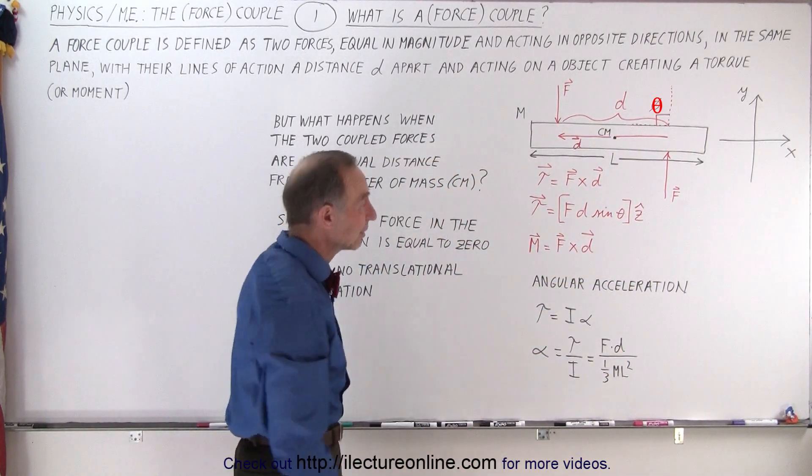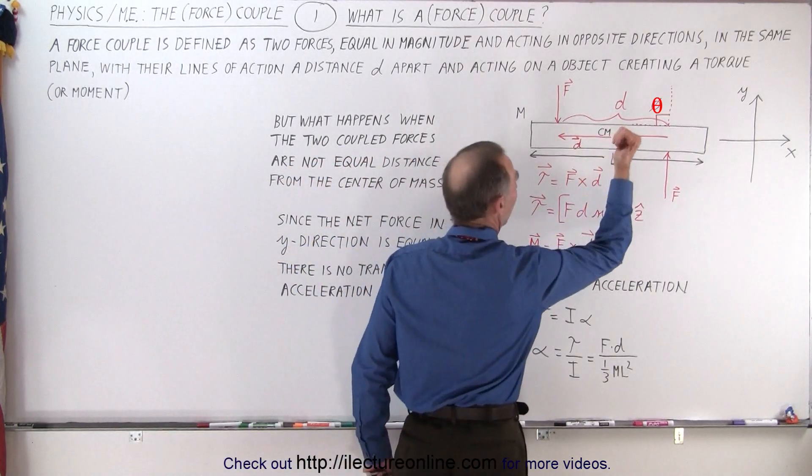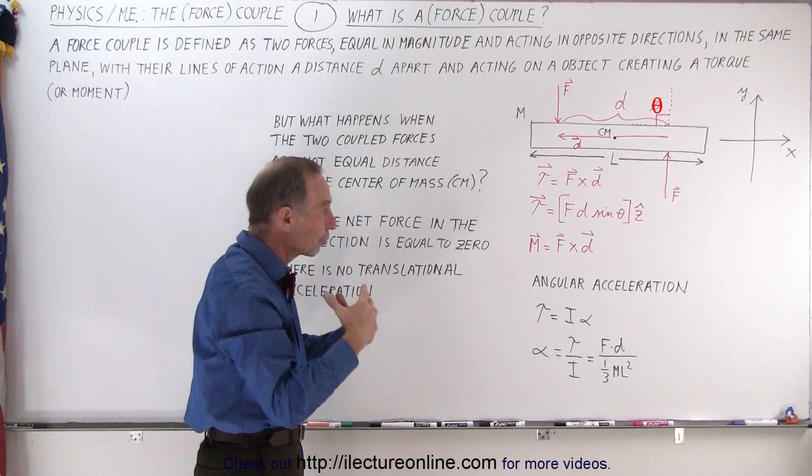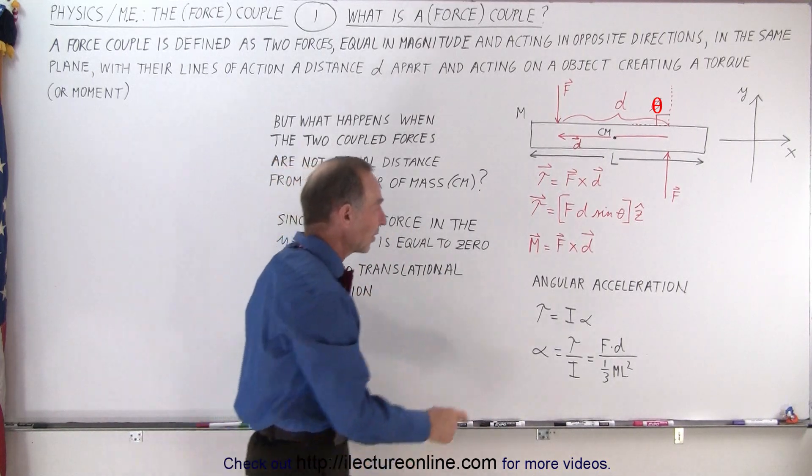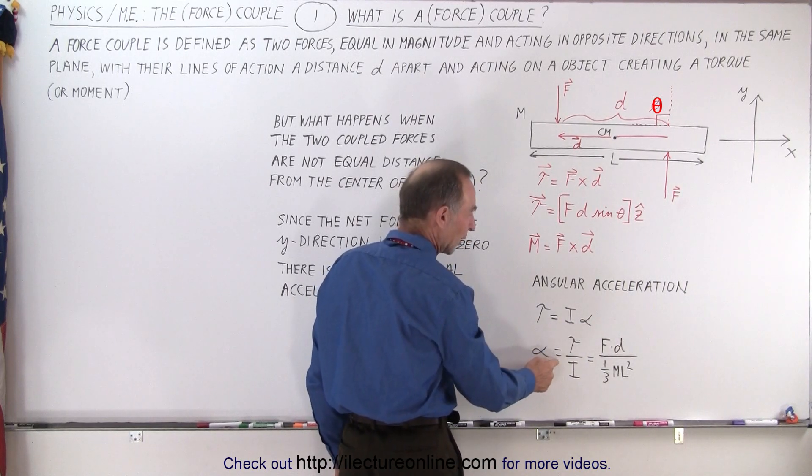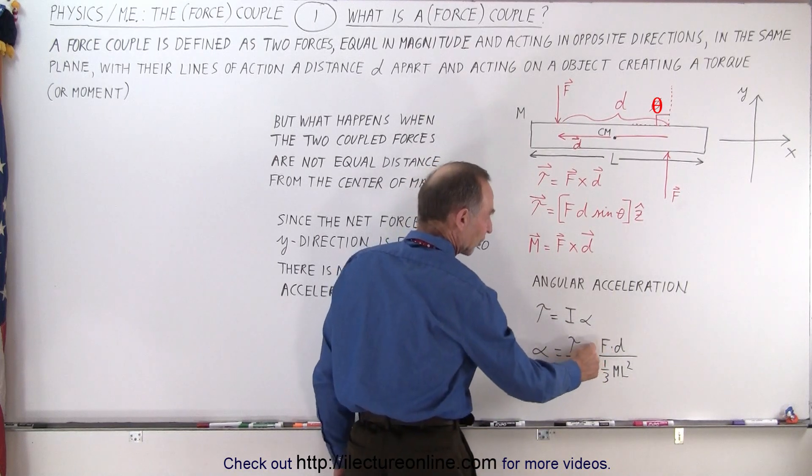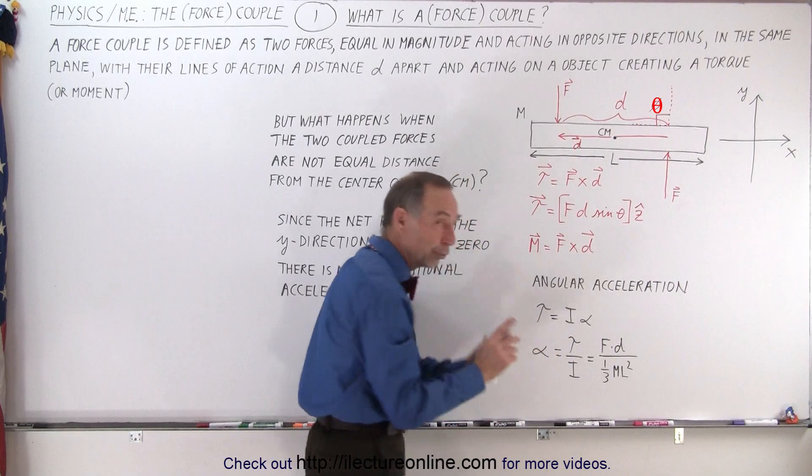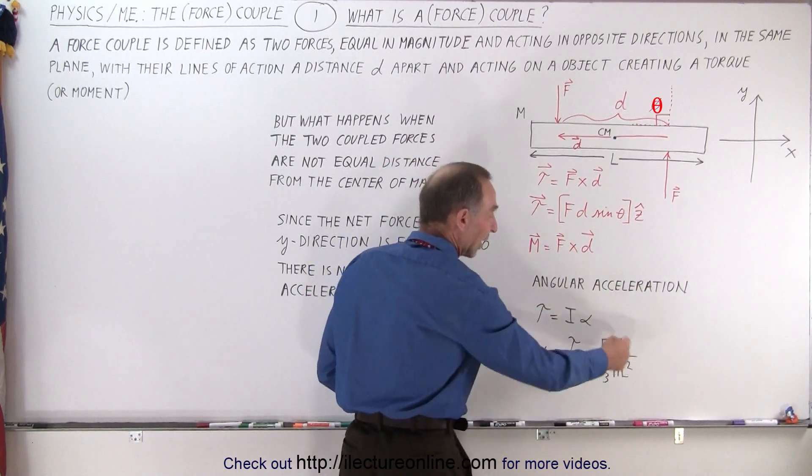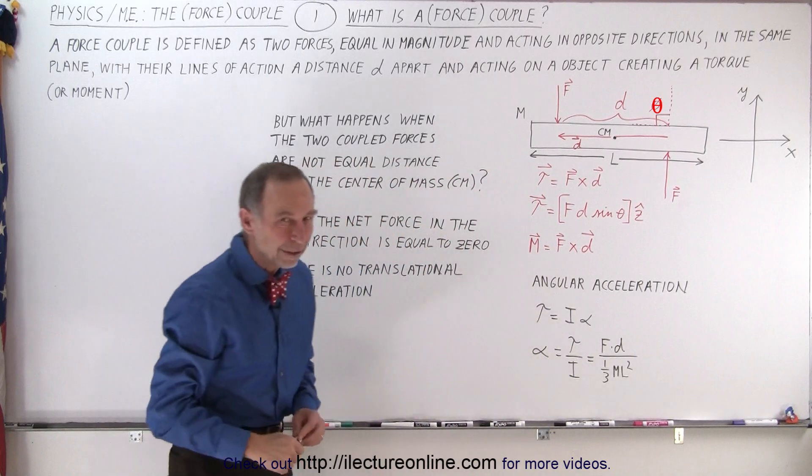Now, the angular acceleration created by that force couple—we can say that torque is equal to the moment of inertia times the angular acceleration, or the angular acceleration is equal to the ratio of the torque divided by the moment of inertia. So the magnitude of the torque will be force times distance divided by the moment of inertia of a bar rotating about its center mass, which is one-twelfth ML squared.